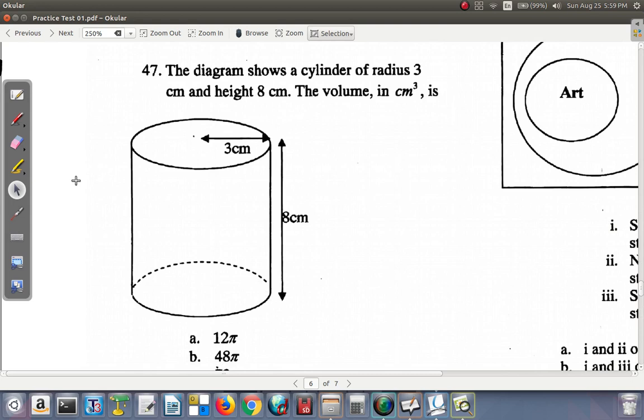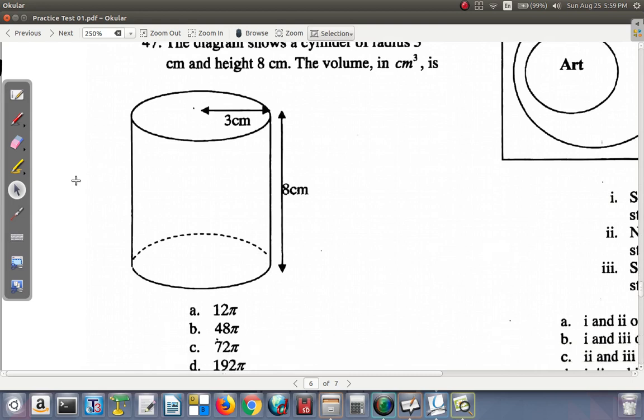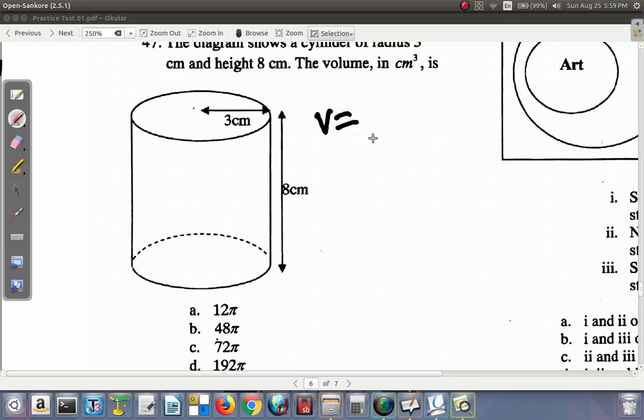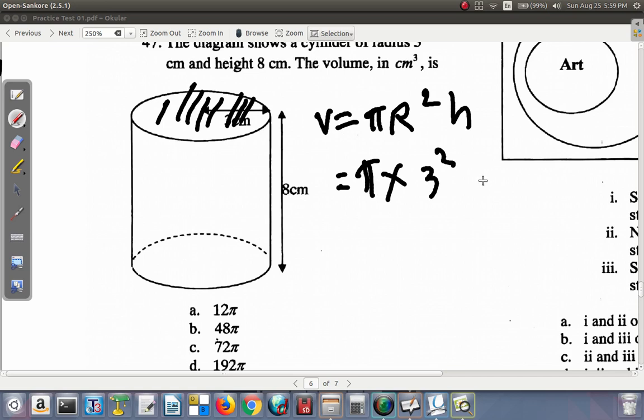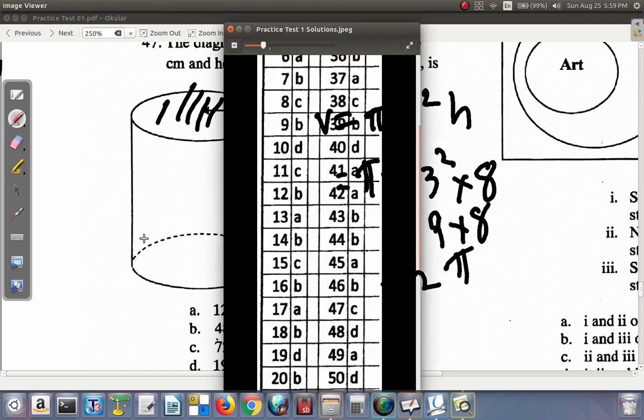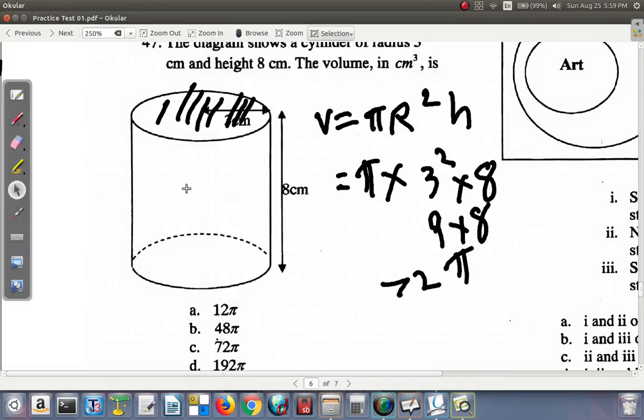The diagram shows a cylinder of radius 3, height 8. The volume in cubic centimeters is—Well, you know that the volume of the cylinder is πr²h. That means the area of the face by the height. So, it is π times 3 squared times 8. 3 squared is 9. And 9 by 8 is 72. So, it's 72π. So, question 47 answer is C.